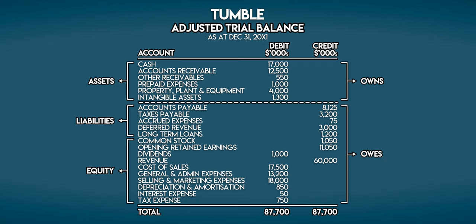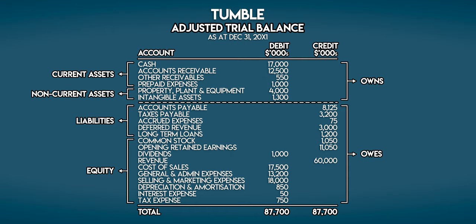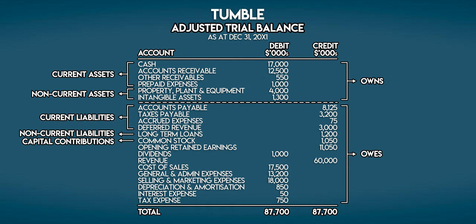To make a detailed balance sheet, we follow the same process, but first we need to divide Tumble's assets and liabilities into current and non-current. Cash, accounts receivable, other receivables, and prepaid expenses are all current assets. Property, plant and equipment, and intangibles are non-current assets. Accounts payable, taxes payable, accrued expenses, and deferred revenue are all current liabilities, and long-term loans is a non-current liability. In the equity section, common stock is a type of capital contribution, and everything below that is retained earnings — Tumble's profits held for future use: opening retained earnings at the start of the year, less dividends, plus Tumble's net profit in the current year.